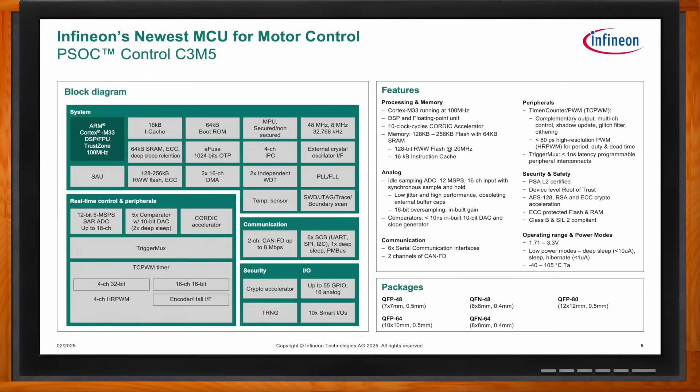The processing core shines when tasked with the complex math and control algorithms needed for three-phase motor control. The heart of the analog blocks is the high-performance programmable analog subsystem, featuring a 12-bit 12 mega-sample-per-second SAR ADC with parallel idle sampling of up to 16 analog channels. It is also equipped with five fast-acting comparators with built-in 10-bit DAC and slope generator; two comparators are also available in deep sleep mode. This analog subsystem is ideal for monitoring multiple current, voltage, speed, and temperature signals.